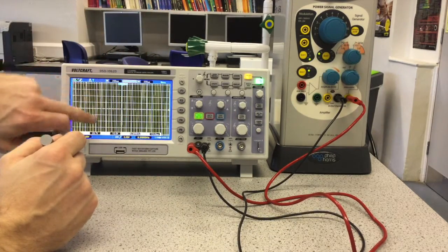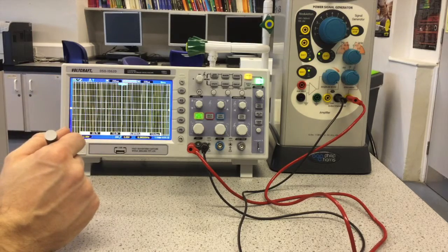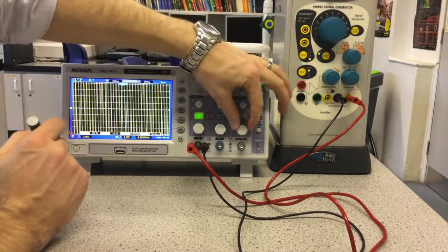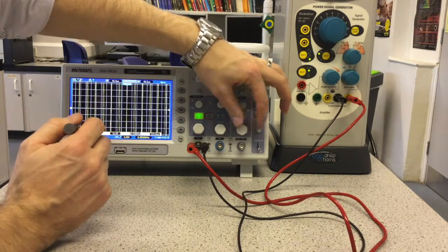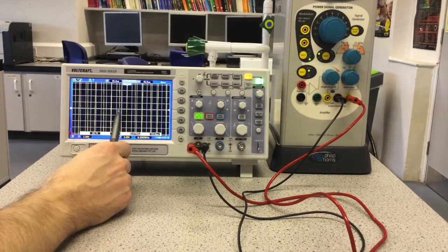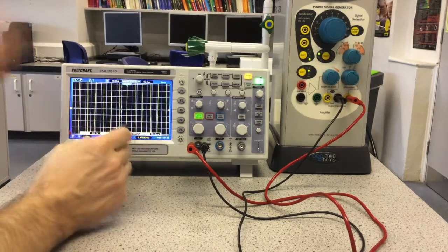At the moment it's a bunch of nearly vertical lines, those yellow lines there, so we need to go to smaller divisions of time per division so that then these lines are more spread out.